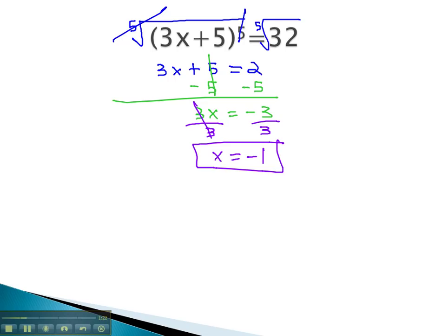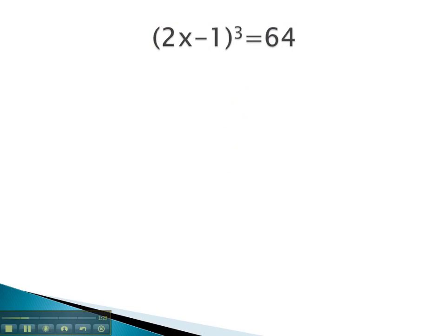Let's try another example, where we get rid of an odd exponent by using an odd root. In this problem, we have a third power. To get rid of a third power, we will use a third root on both sides.